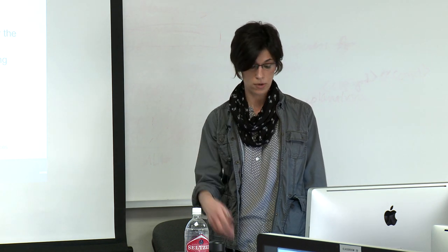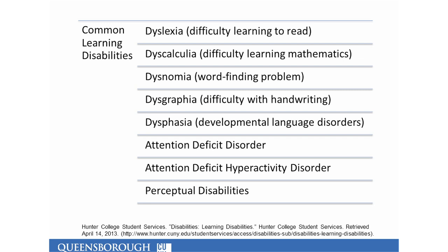Learning disability is understood as an umbrella label that includes many different, complex, and related disorders. Each exhibits a wide variety of characteristic skills, struggles, and behavioral patterns, and each requires different types of treatment or accommodations. Given the breadth of this umbrella label, there is some disagreement about what categories actually fall under it, particularly around ADHD and ADD.